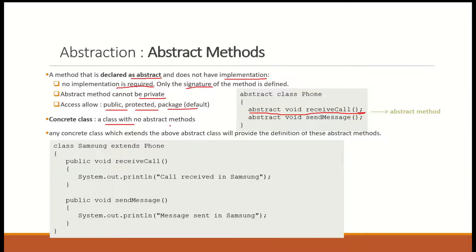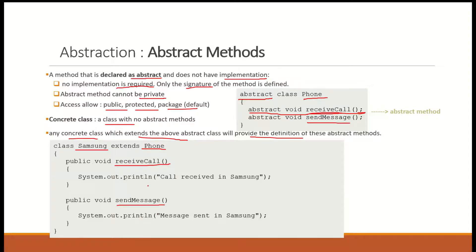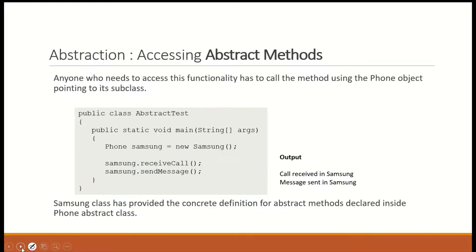Concrete class — when a class contains no abstract method, it is a complete class. Any concrete class that extends the abstract class should provide the implementation of the abstract methods. For example, Phone is an abstract class, and Samsung is a concrete subclass that extends Phone. Samsung needs to have the implementation for 'sendMessage' and 'receiveCall'. Once implemented, the methods are complete and Samsung is a concrete class. How do you call those methods from the main method?